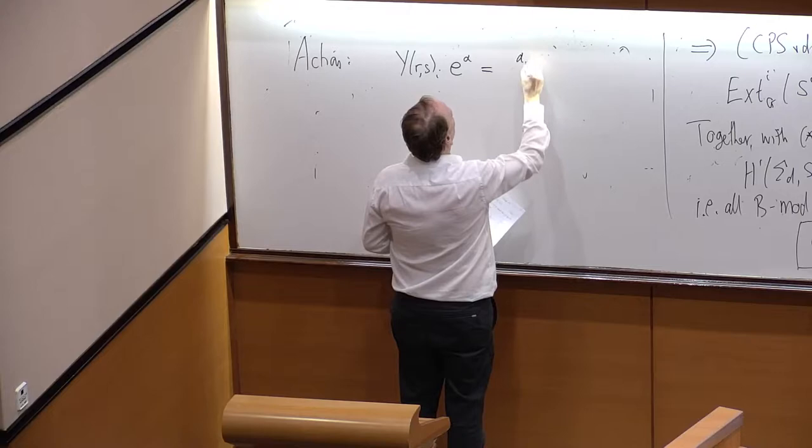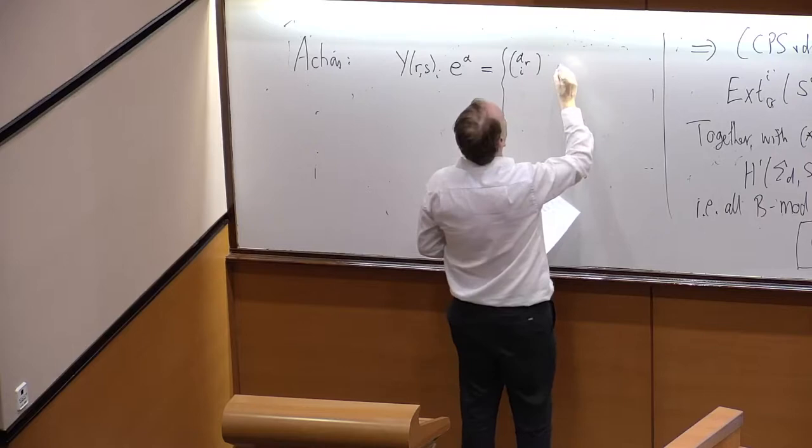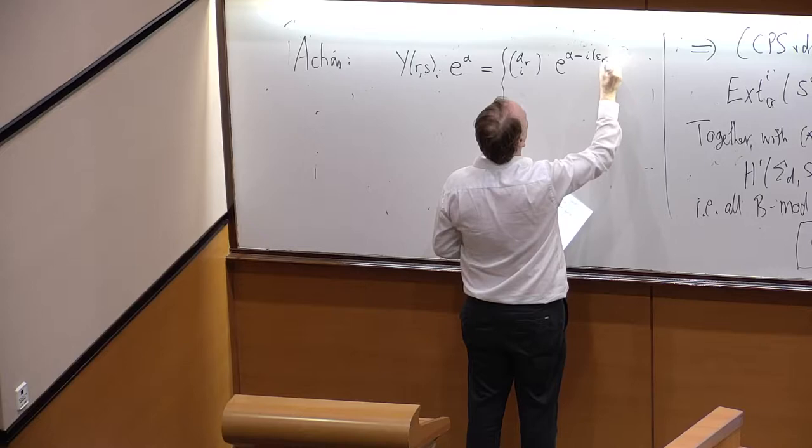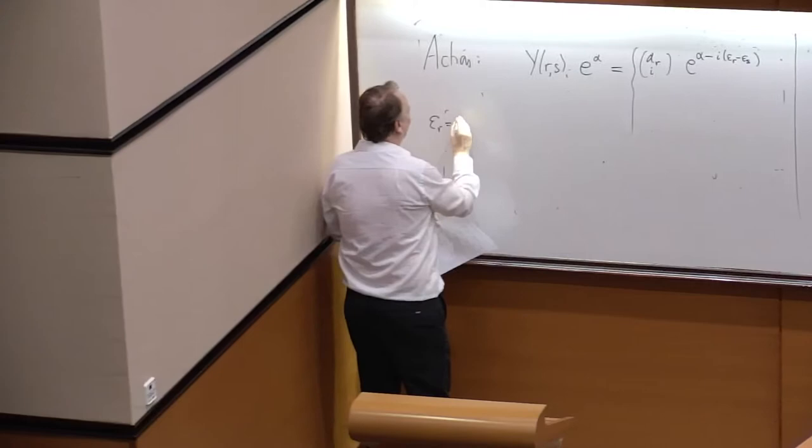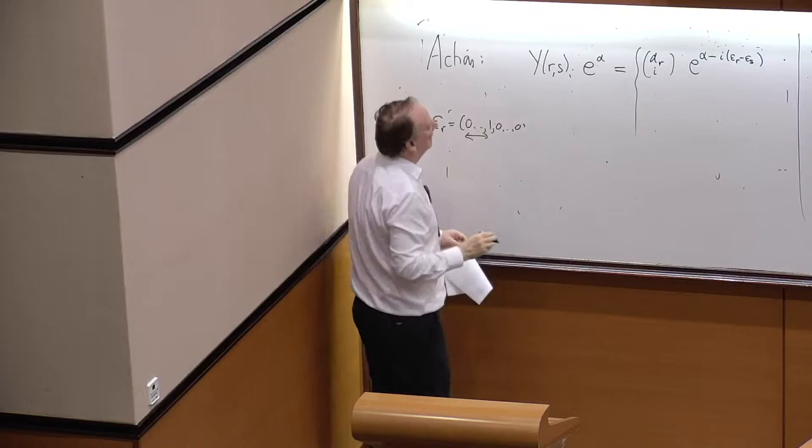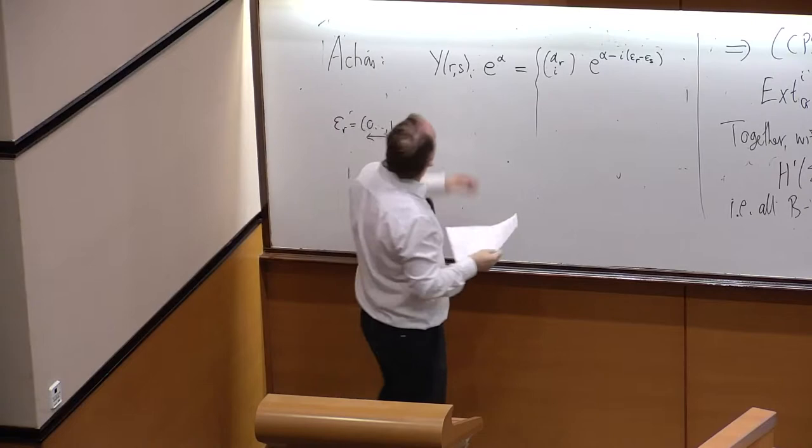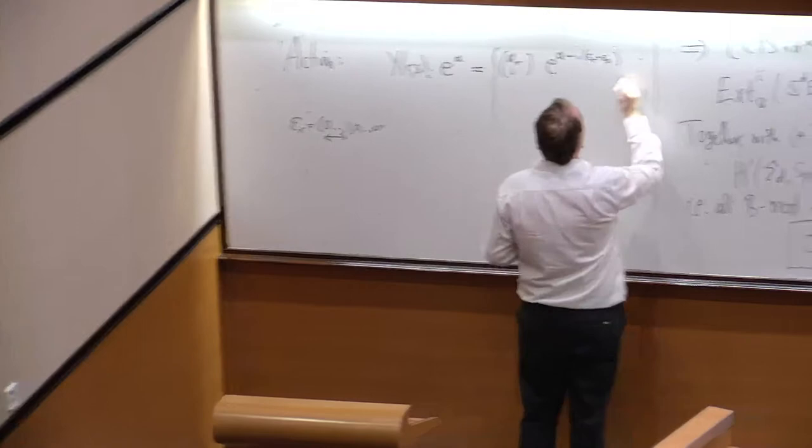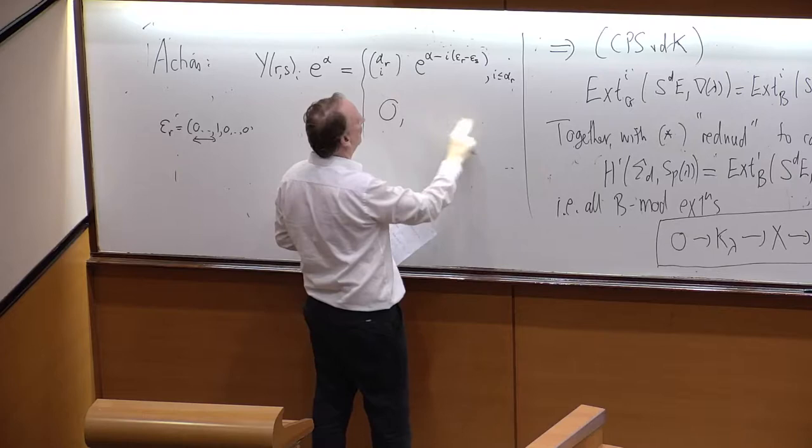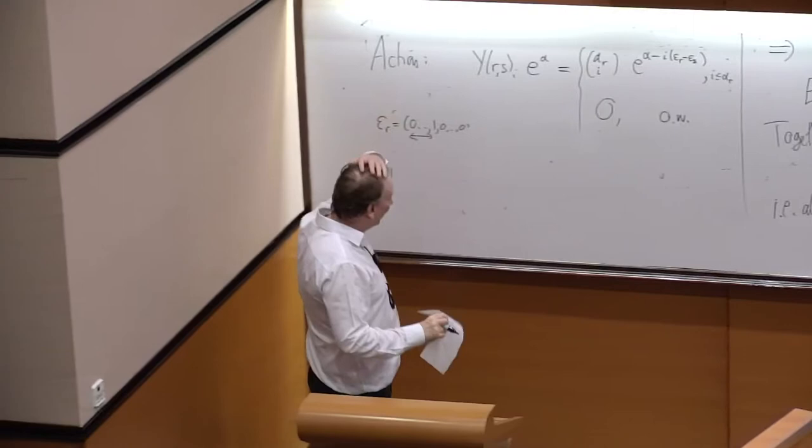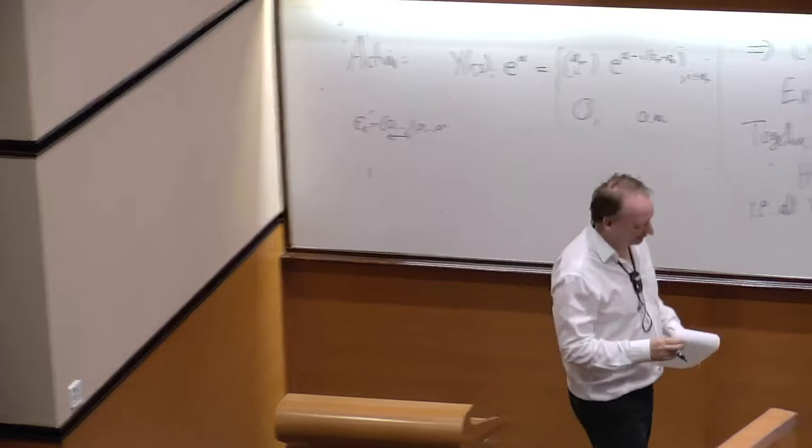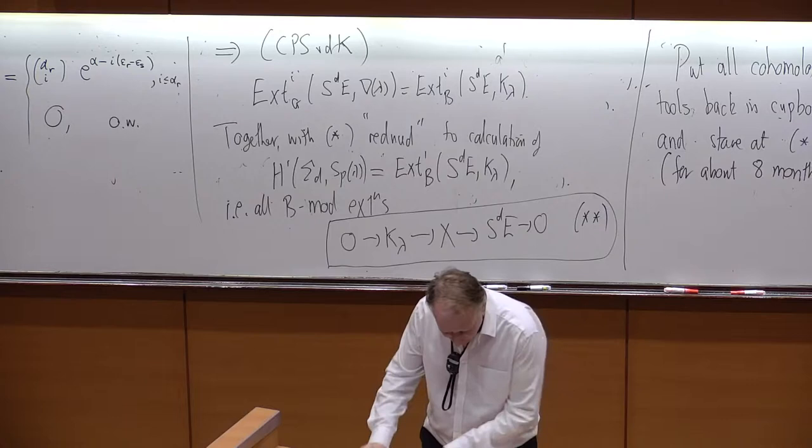So, these operators are very obliging on these elements. Here's the action. Y_{r,s,i}(E^α) equals (α_r choose i) times E^{α - i(ε_r - ε_s)}. So, ε_r is this row vector with a 1 in the r-th position. The point is that these coming from the negative Borel, they're pushing down the weights. If you regard this as a module for T, it has weight α. And this pushes it down like that. And perhaps I should say i less than or equal to α_r, but I wouldn't really get into trouble if I didn't, 0 otherwise. So, it pushes it down if it can. And if it can't, it's 0. But that would be 0 anyway.